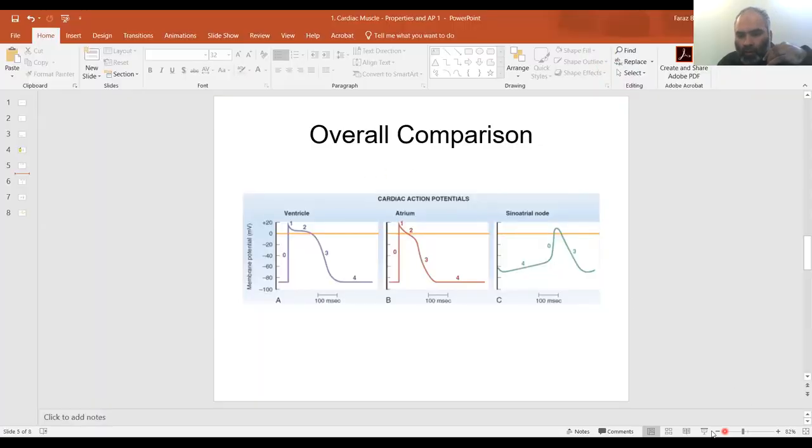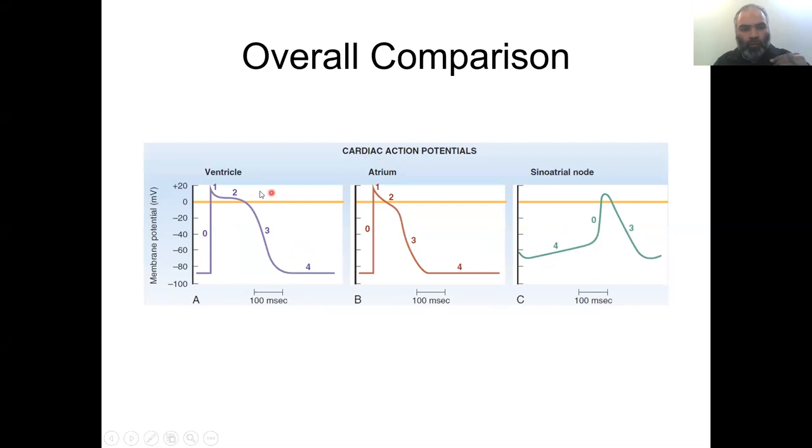This is a nice slide where you can compare ventricle, atrial, and SA nodal action potential. I'm introducing this because this will feature in the coming lectures. You can see that the shape of the action potential of ventricle and atrium are comparable. However, as I mentioned, the change is in the size of the plateau. You can clearly appreciate that ventricle is a bigger muscle, hence it has a longer plateau, and atria are smaller muscles and hence they have a rather clumsy looking plateau. The rest of the shape is similar.